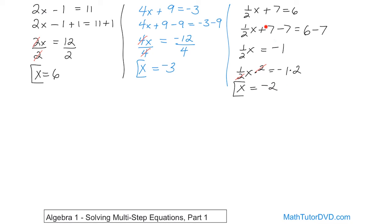And if you stick negative 2 in here, then you'll have 1 half times negative 2, which is going to be negative 1. That will give you negative 1 for this quantity, plus the 7 is going to give you positive 6, which is correct. Everything's correct there.